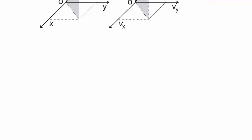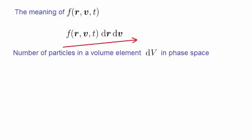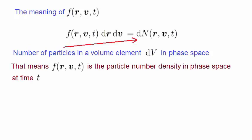Let's look at the meaning of the distribution function. Say we multiply the distribution function by the six-dimensional volume element of phase space. This means that it's the number of particles in a volume element, dV, in phase space. Let's symbolize that number of particles by dn. So another way of phrasing this is that the distribution function is the particle number density in phase space, at time t.